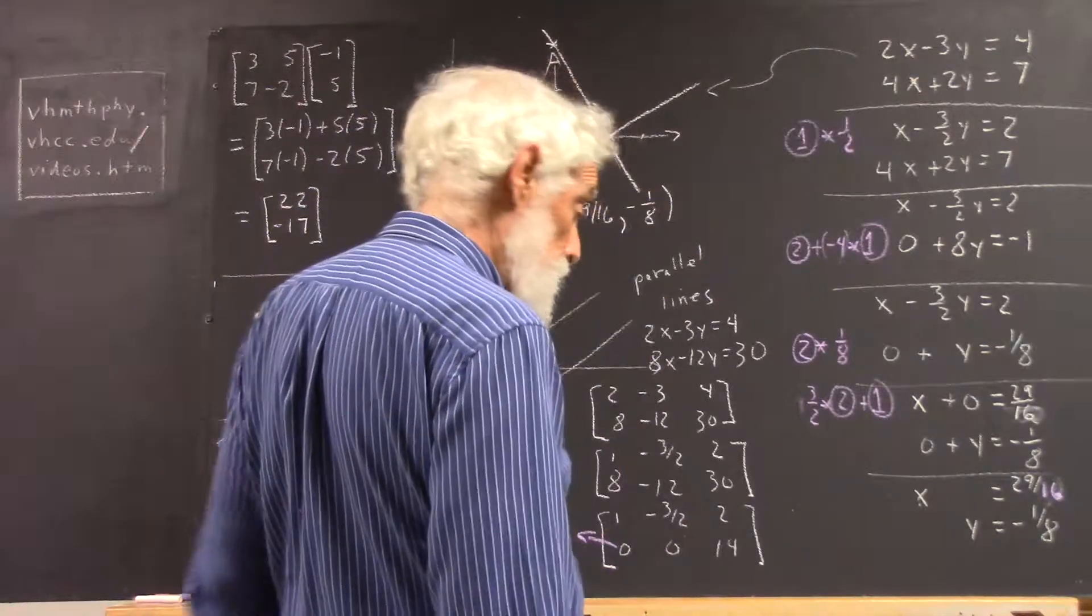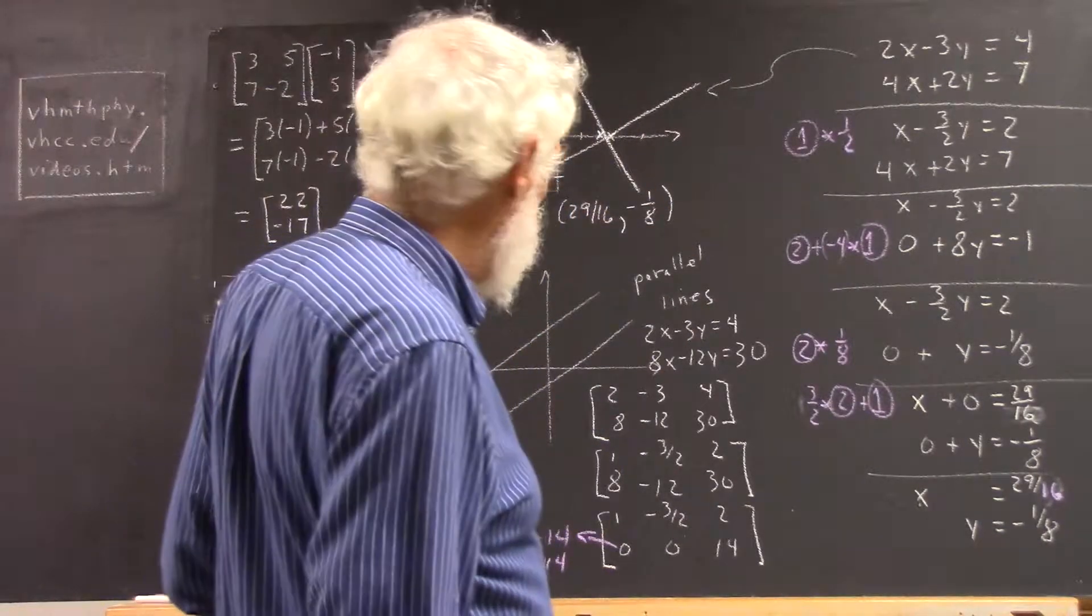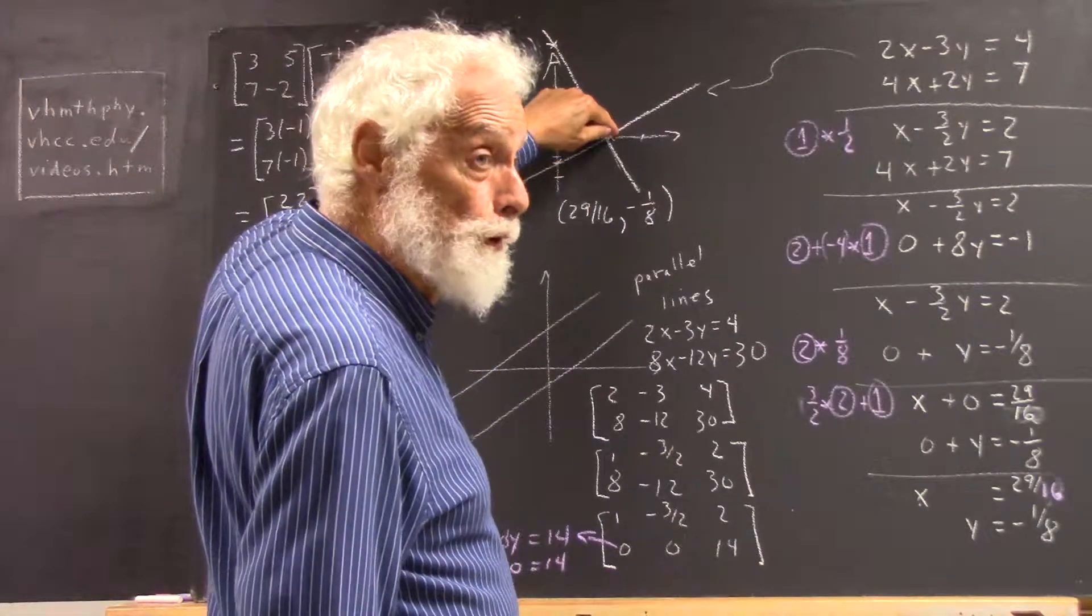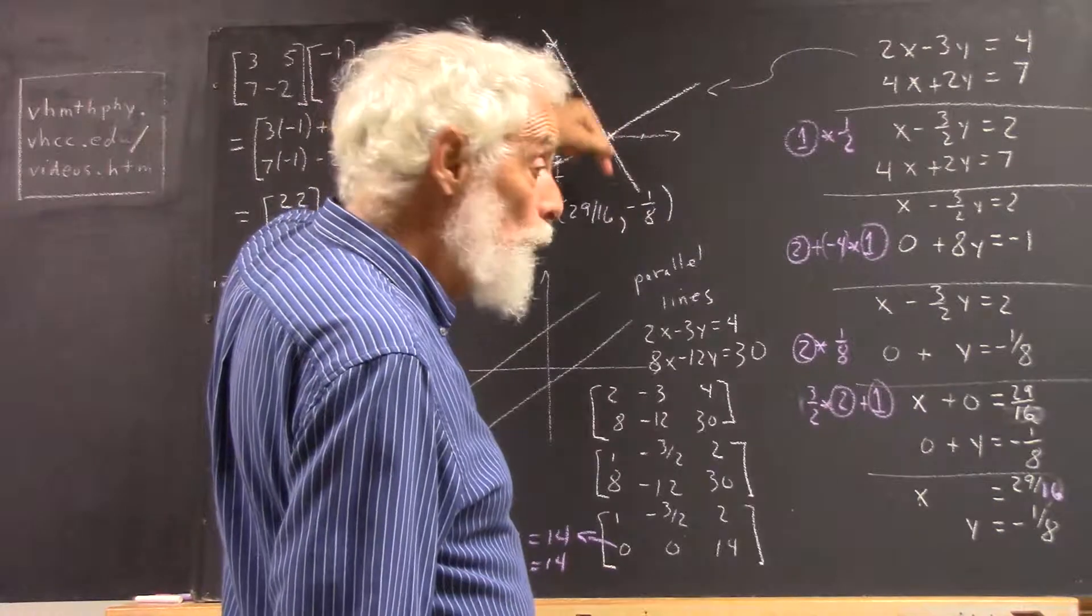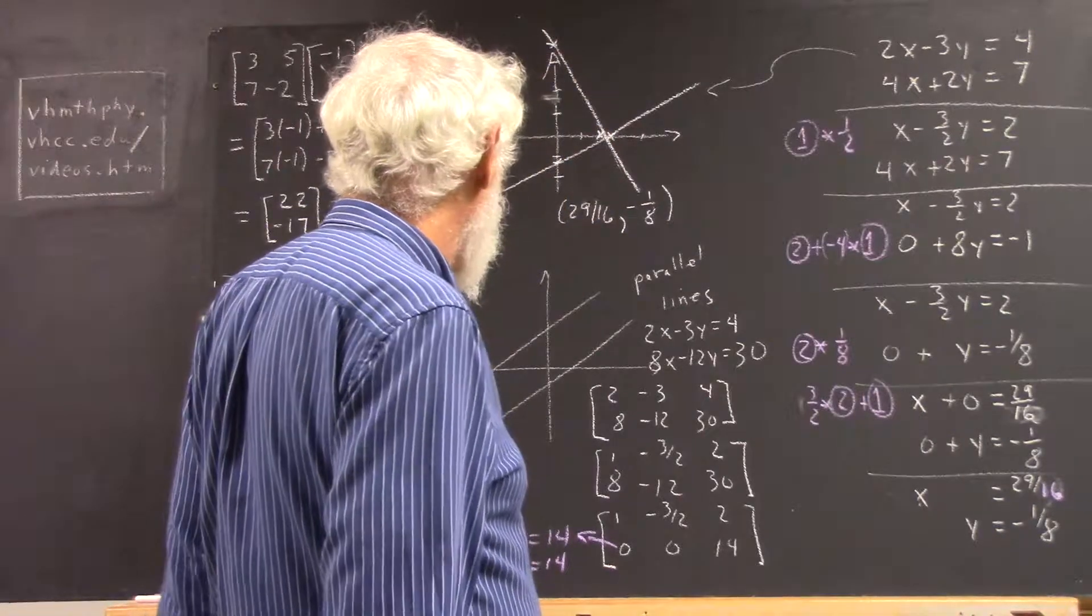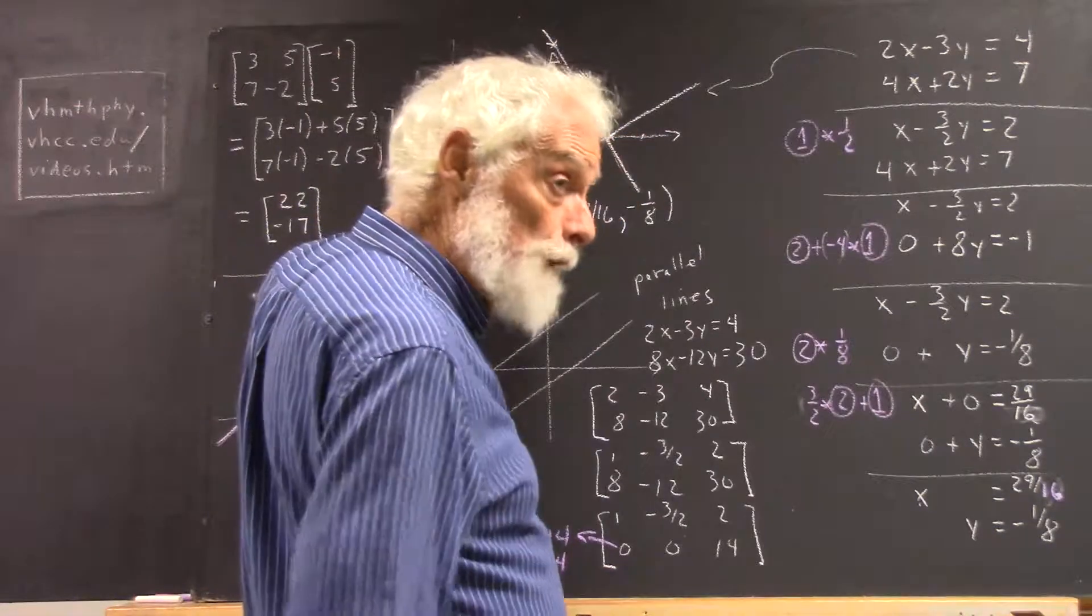So this line's going to be steep here, and the two lines are going to intersect pretty close to this point 2, yeah, 2, 0, but a little bit below the x-axis and a little bit to the left of 2, 0.